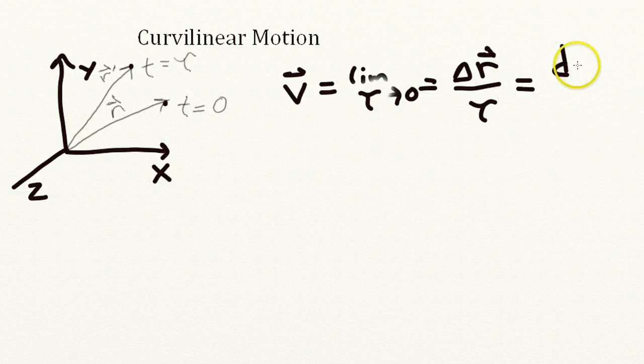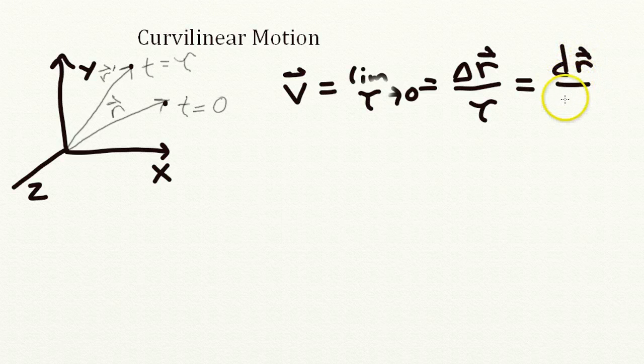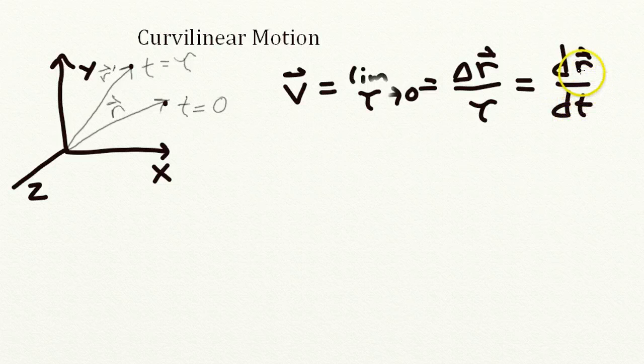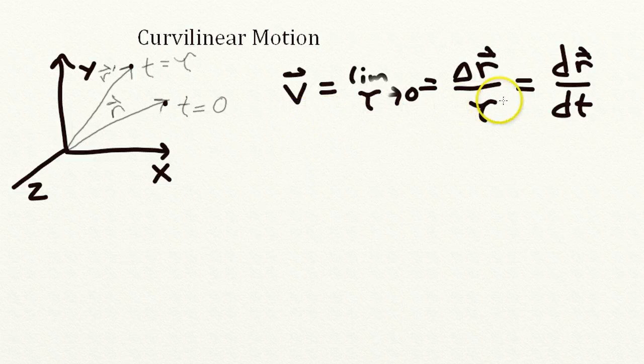So we can write that this way: the velocity equals dr vector over dt. So we've got a good definition here of the velocity. It's just the change in the r vector with time.